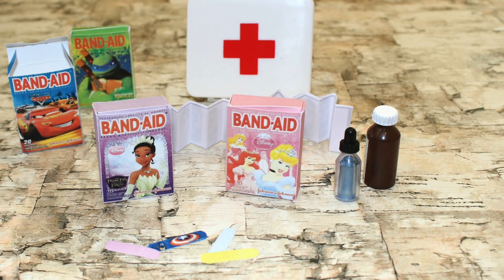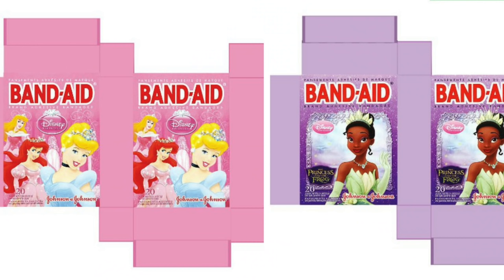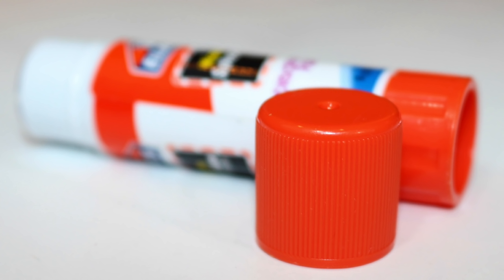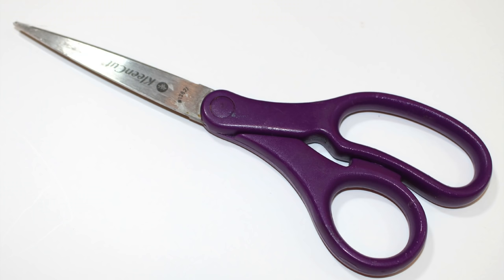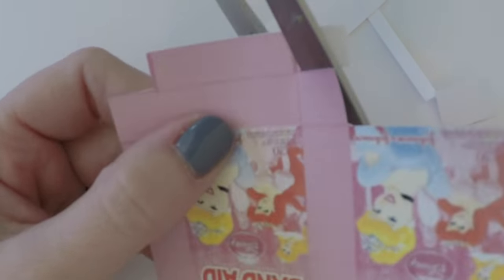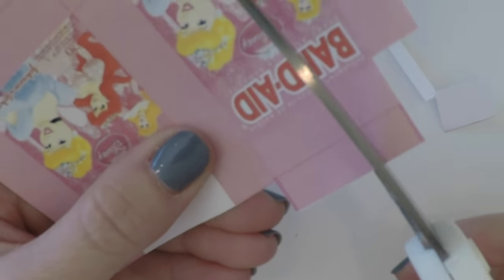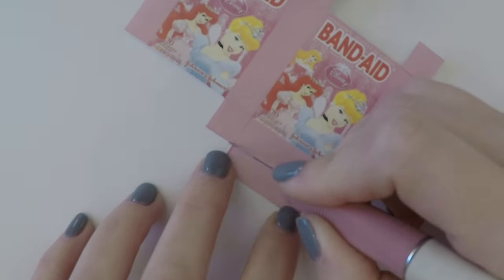For this craft you'll need printables, glue stick, and scissors. Start by cutting out the band-aid boxes. You can find these on our blog at americangirlideas.com. They should print the perfect size for an American Girl.